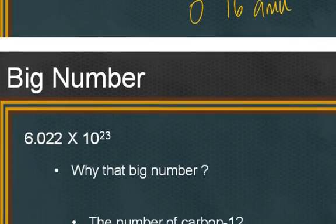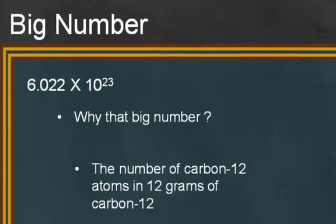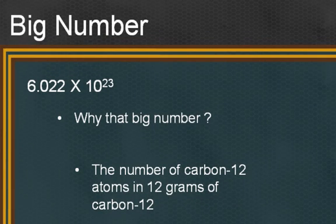But it's very, very tiny, so we need a very, very big number to relate that tiny model to the macroscopic scale. And that big number is 6.022 times 10 to the 23rd. That's the number that we call the mole, 6.022 times 10 to the 23rd. Well, why did we choose that big number to relate the macroscopic world with the microscopic world?